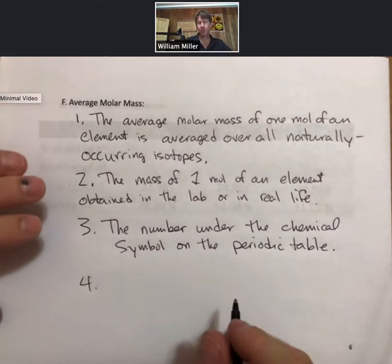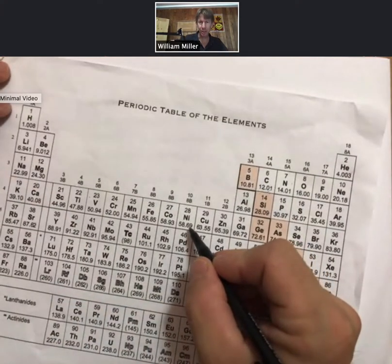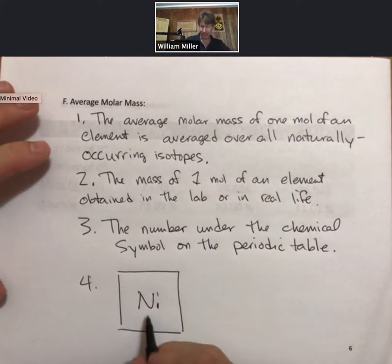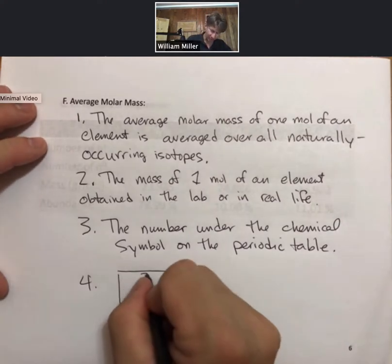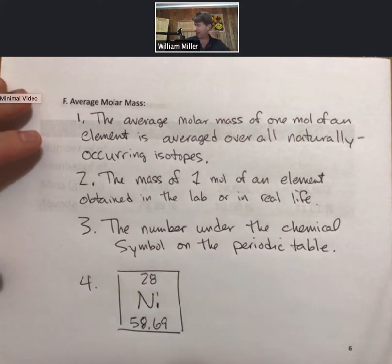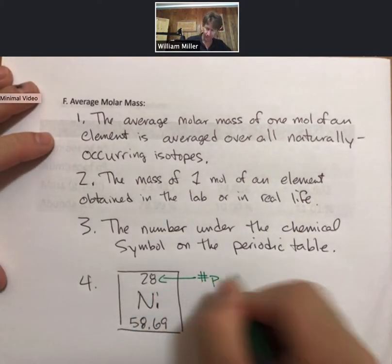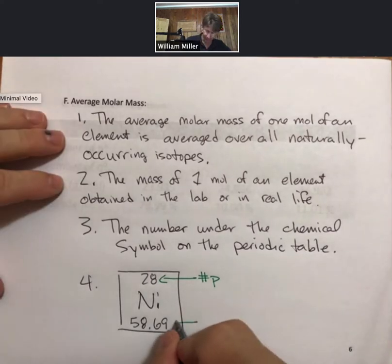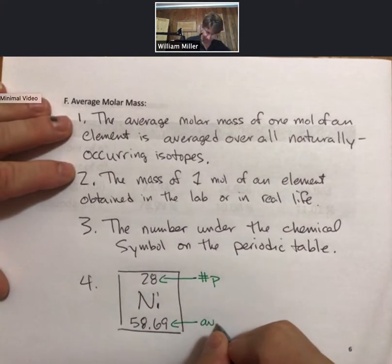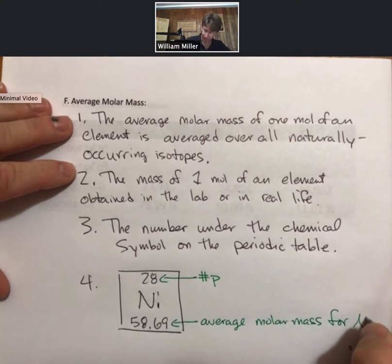So for example, we've already talked about carbon. Now let's talk about nickel. Nickel, it's boxed on the periodic table, has Ni for the chemical symbol. It has 28 on top and it has 58.69 on the bottom. So we've already talked about the top number, that's the number of protons, also called the atomic number. Now what we're saying is this number on the bottom is the average molar mass for nickel.